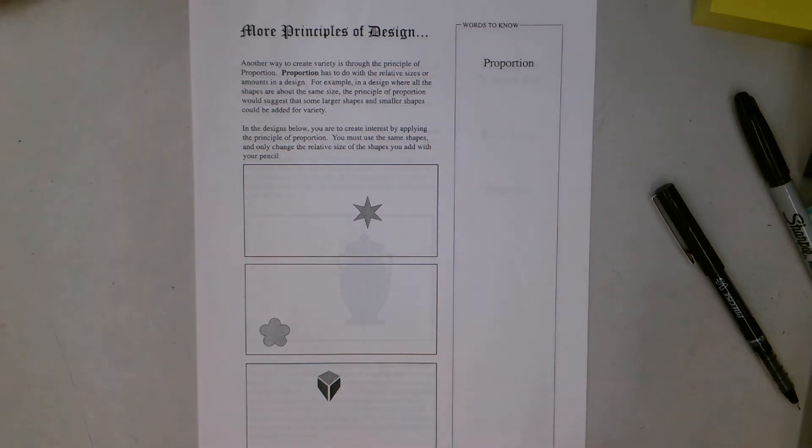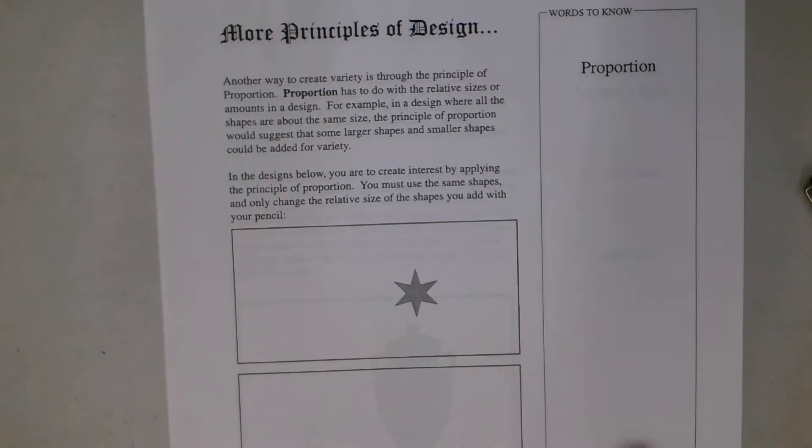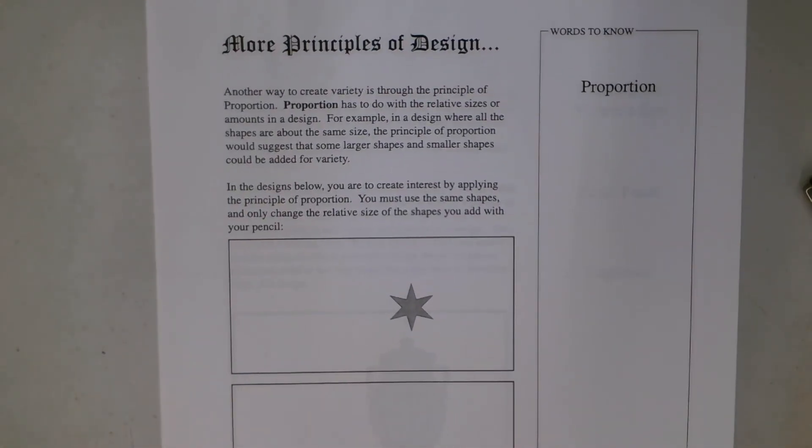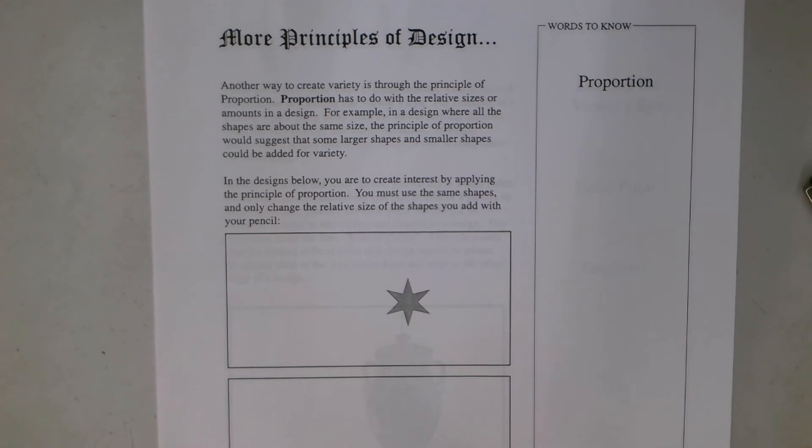All right, we're getting close to the end of all that information about the elements of art and the principles of design. We're working on our very last one, so let's get in here and close up on this. It's easier to read for you. More principles of design: another way to create variety is through the principle of proportion.